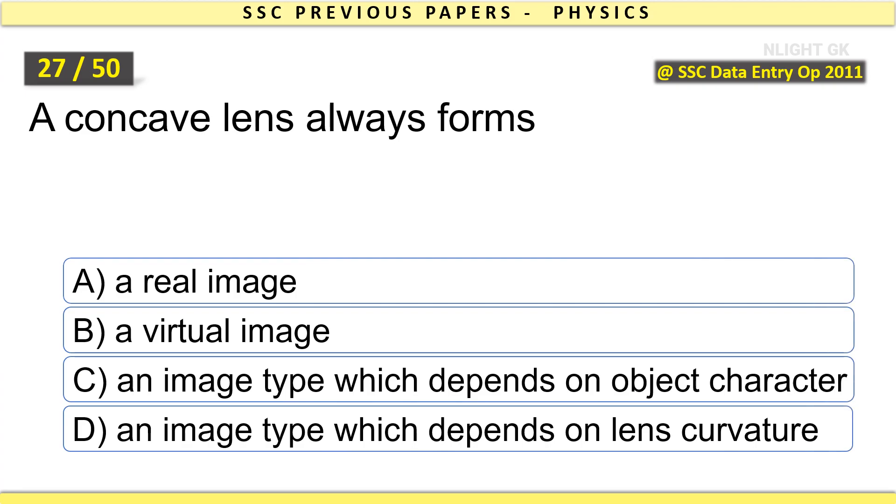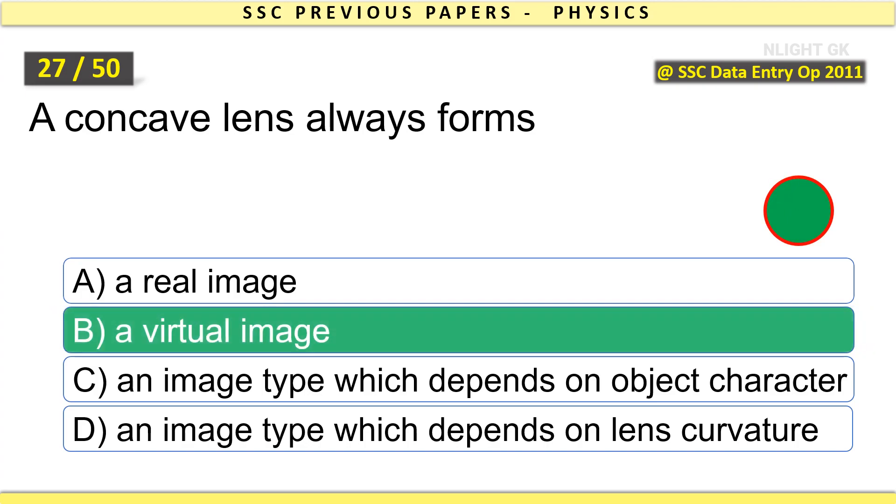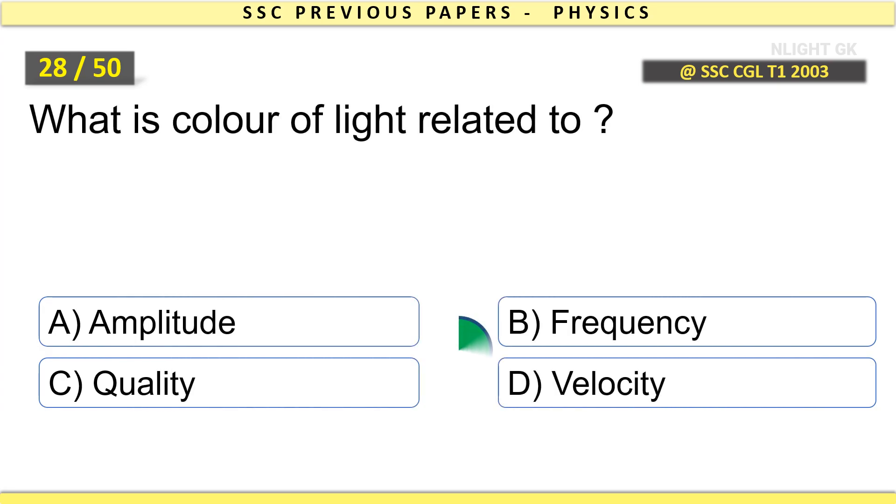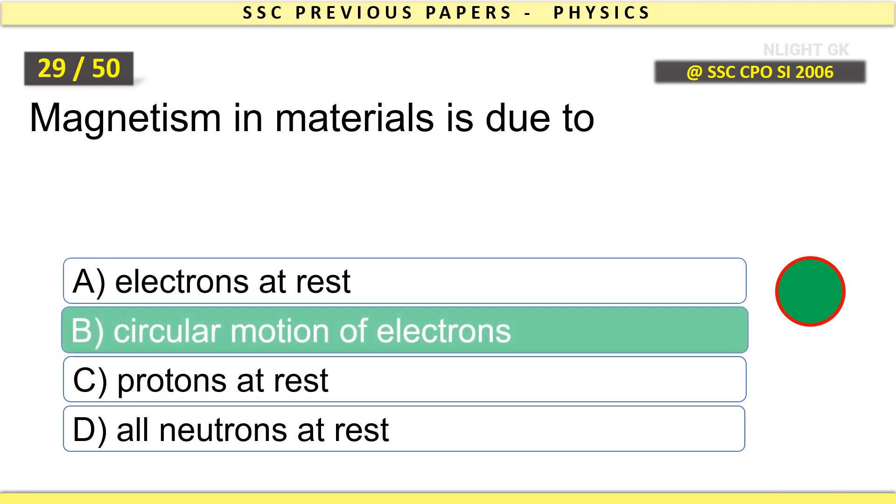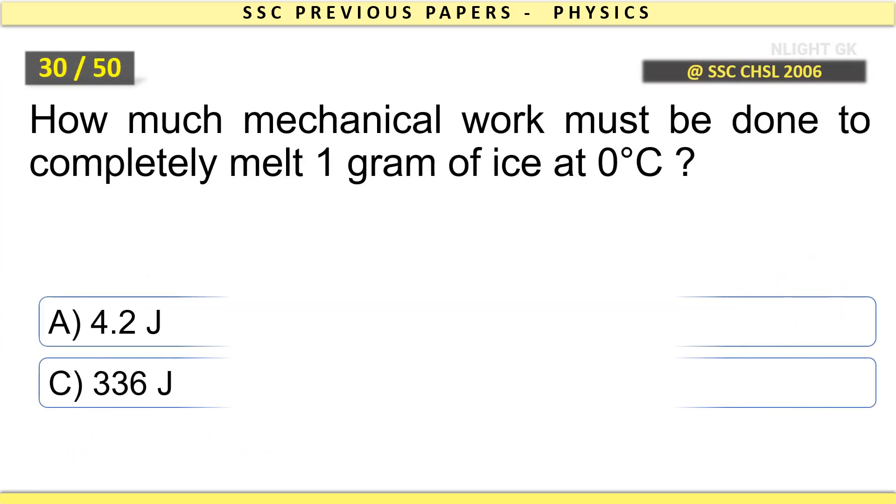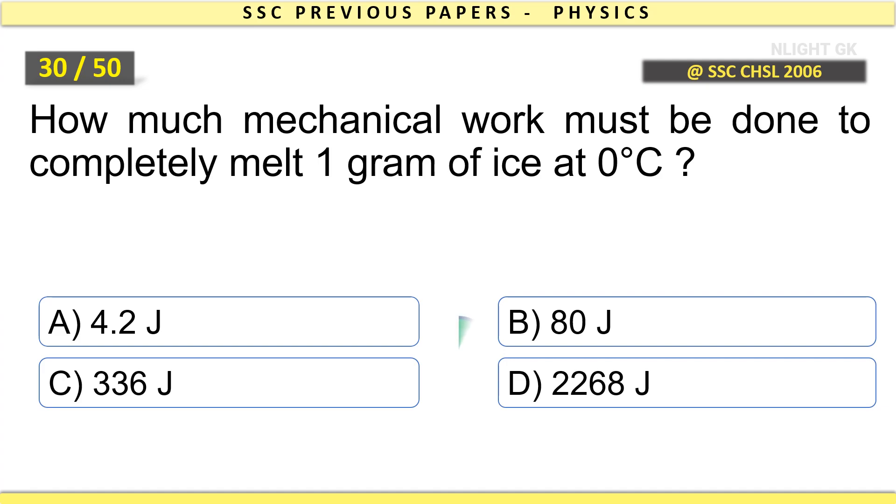An instrument that records earthquakes is seismograph. Which of the following circuit elements is used to block DC in an electronic circuit? Capacitance. A concave lens always forms a virtual image. What is color of light related to? Amplitude.